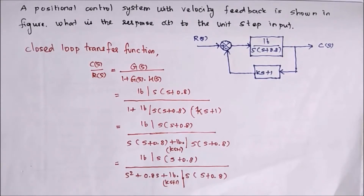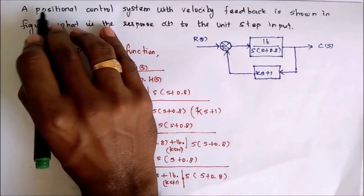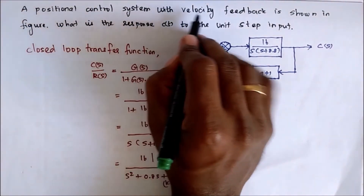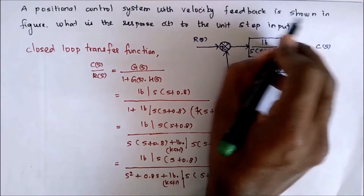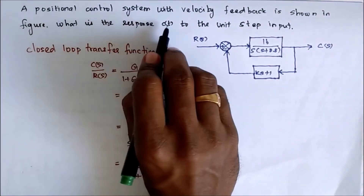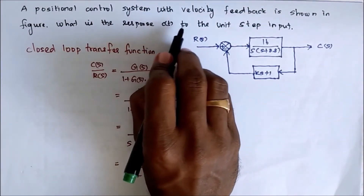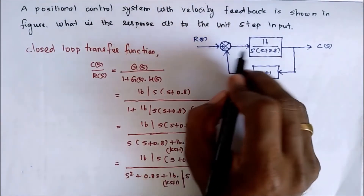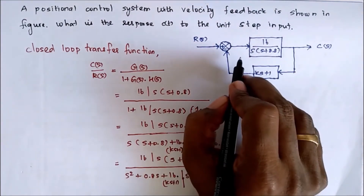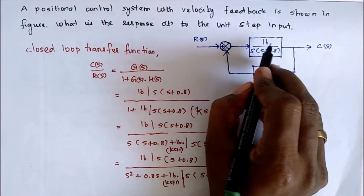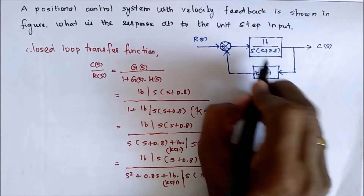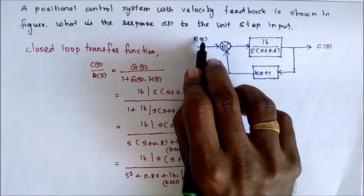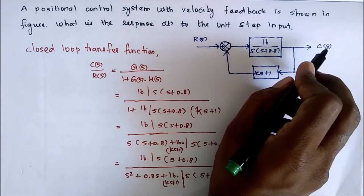In this problem, we are going to solve the response of a given closed loop system. The given problem is a positional control system with velocity feedback, as shown in the figure. What is the response C to the unit step input? This is the given closed loop system, where G is the forward path, H is the feedback, R is the input, and C is the output.